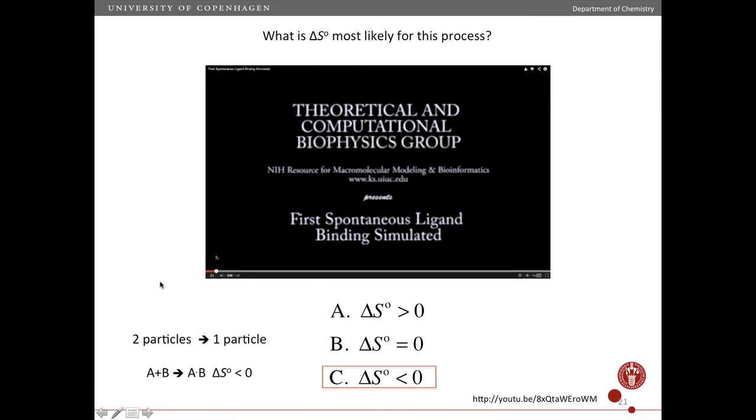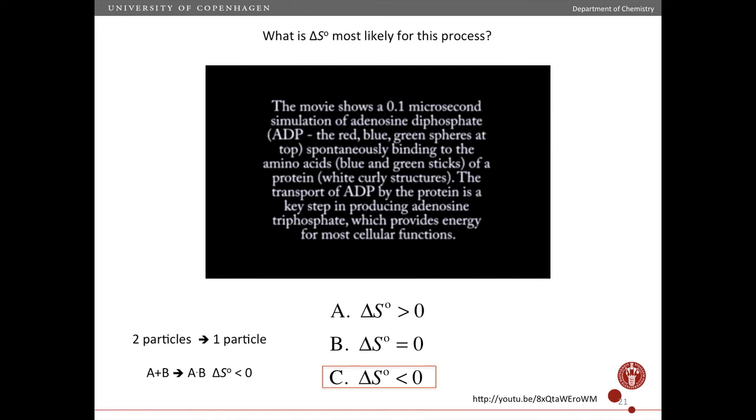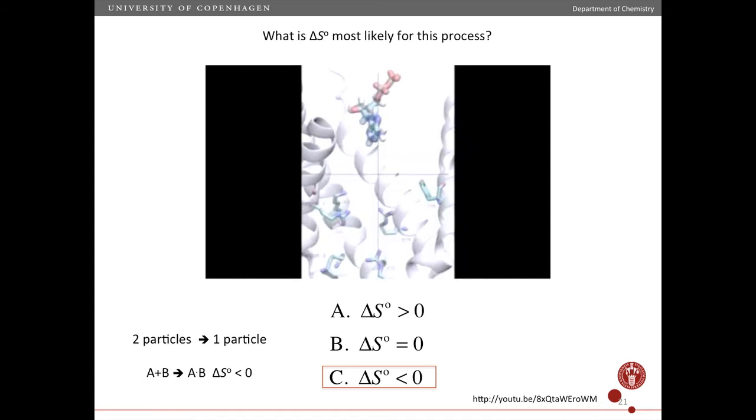Okay, so the right answer is C. The entropy, the standard entropy decreases for this process. And one way to think about it is that you go from two particles to one particle. So in the beginning of the simulation, right, you have two particles, this one here, and then the protein.